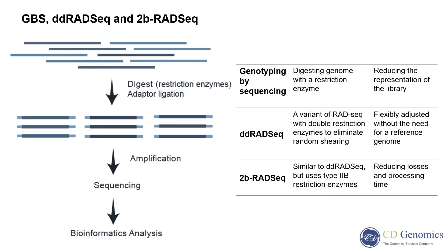ddRADseq is a variant of RAD sequencing that treats genomic DNA with double restriction enzymes to eliminate random sharing. The detection area and coverage can be flexibly adjusted without the need for a reference genome. 2b-RADseq is similar to ddRADseq but uses type IIB restriction enzymes and requires a reference genome. It targets all restriction sites and requires highly reduced library sequencing, further reducing losses and processing time.